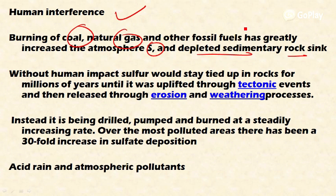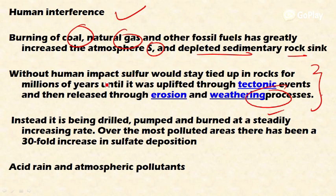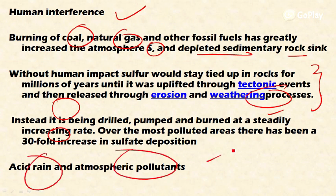Without human impact, sulfur would have stayed tied up in sedimentary rock sinks for millions of years. If we had not excavated sulfur from sulfur rocks, it would have remained locked in those sources until uplifted through tectonic events and released by erosion and weathering. However, human beings are extracting sulfur for their own needs, which has increased the concentration of sulfur in the ecosystem by 34%, leading to deleterious effects like acid rain and atmospheric pollutants such as sulfur dioxide and sulfur trioxide.